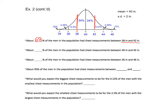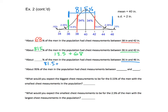What percent had chest measurements between 36 and 42 inches? We already know 38 to 42 is 68%; just add the 13.5% section from 36 to 38, giving us 81.5%. For 36 to 46 inches, take that 81.5% and add 13.5% plus 2.35% for a total of 97.35%.